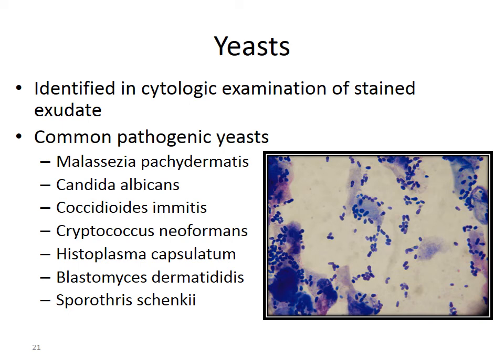Yeast is very important in our field — a lot of animals have yeast infections and chronic yeast issues, primarily in their skin and ears. We identify yeast via cytological examination of stained exudate, such as ear swabs or swabs of the interdigital skin. If there's enough yeast present, we consider it an infection. The most common pathogenic yeast is Malassezia pachydermatis, which looks like a footprint or snowman shape due to budding.